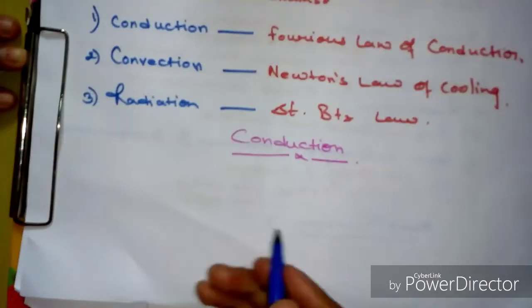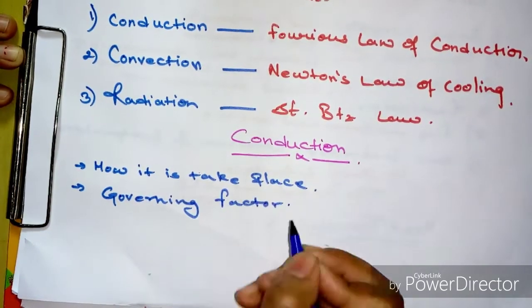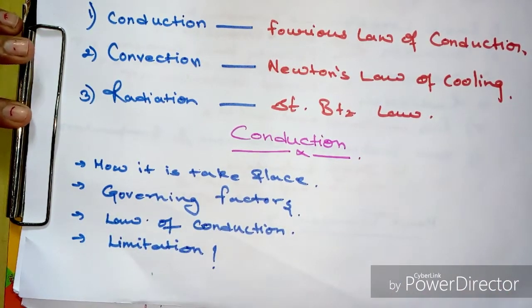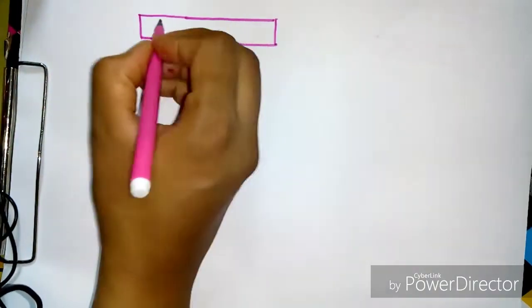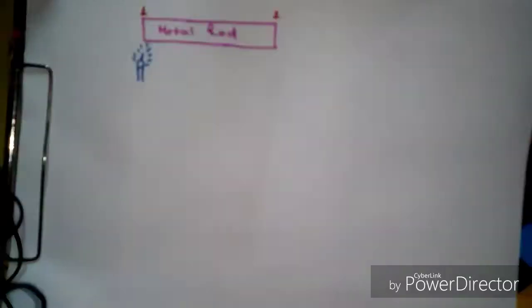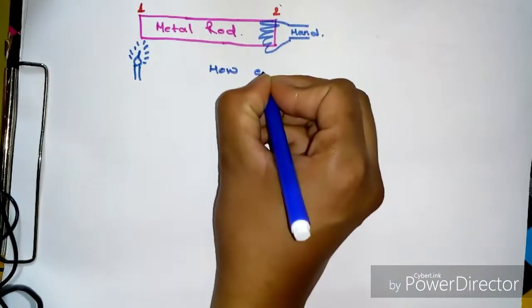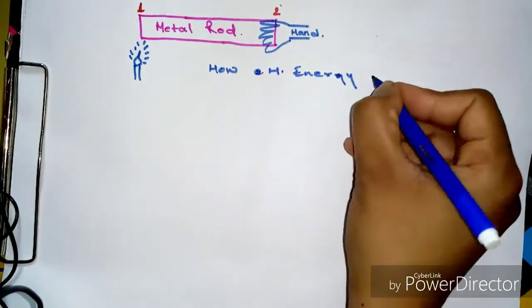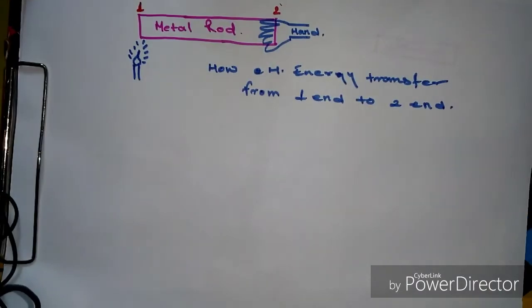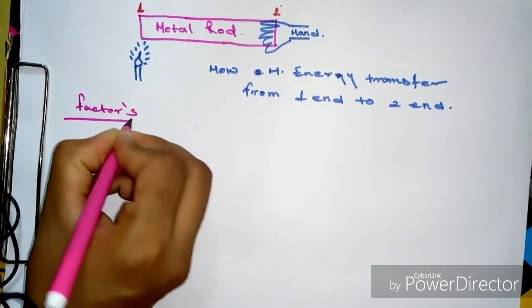Now we will start conduction heat transfer in detail — how it takes place, what the governing factors are, the law for conduction heat transfer, and the limitations of this law. Consider a metal rod heated by a heating element at end one; after some time we feel the same heat at end two. How does heat energy transfer from end one to end two? In conduction, there are two governing factors.